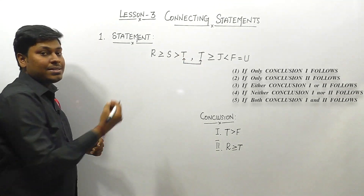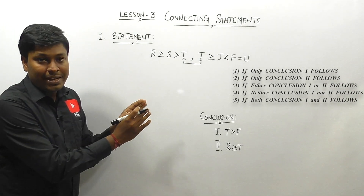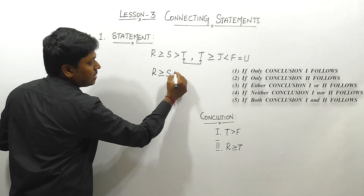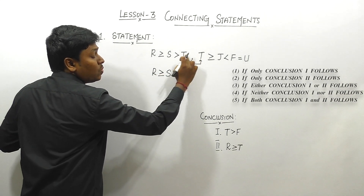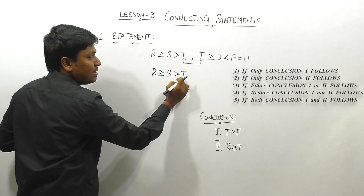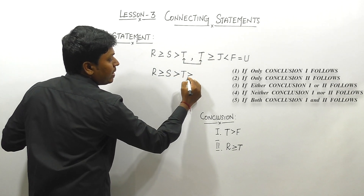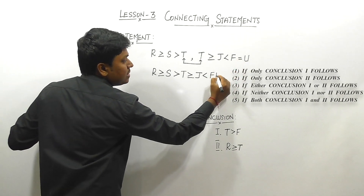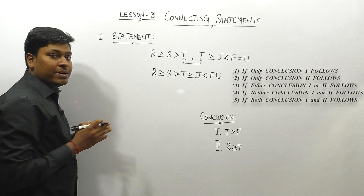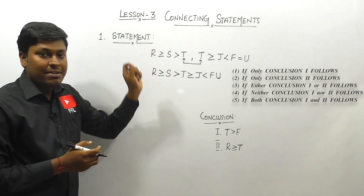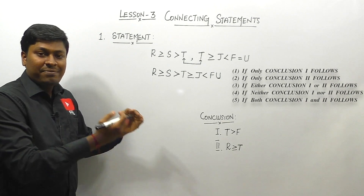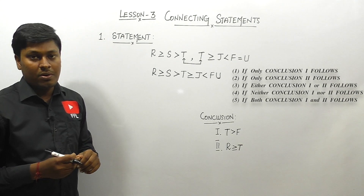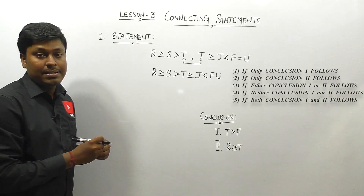By merging the two statements using element T, we get the single expression: R ≥ S > T ≥ J < F = U. Since F and U are equal, we write them as FU. The two statements have now been converted into a single statement, and we can proceed to evaluate the conclusions.